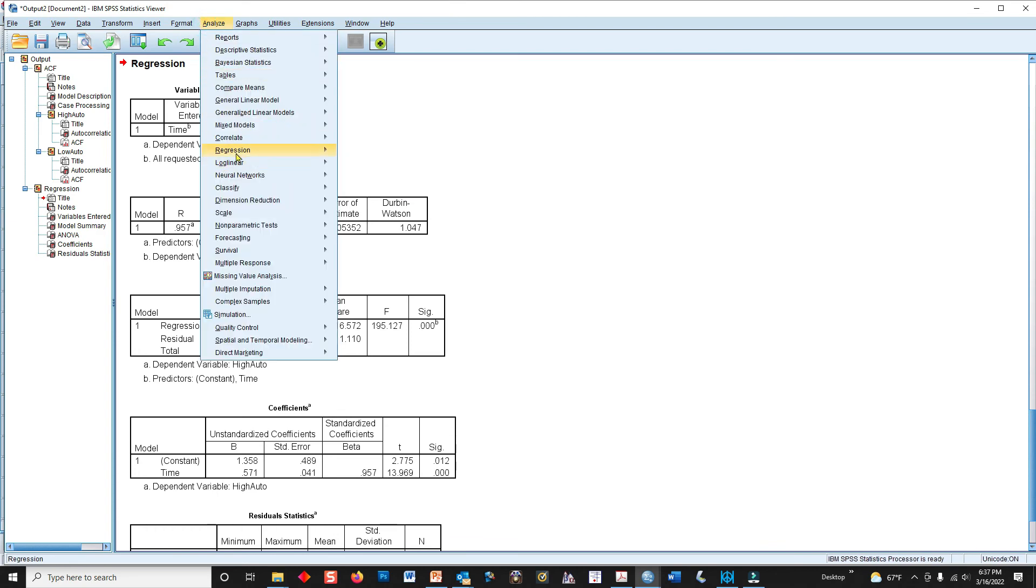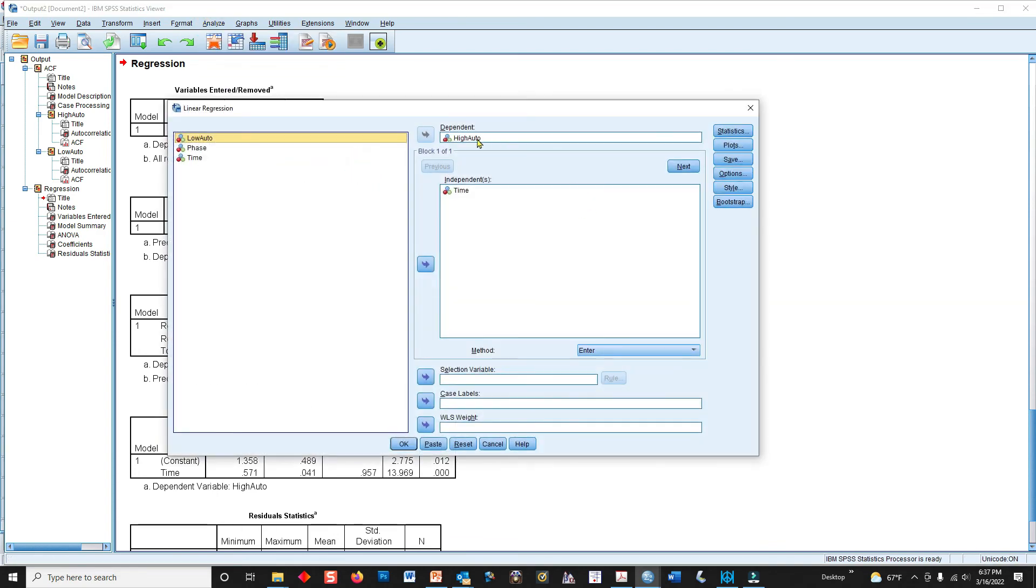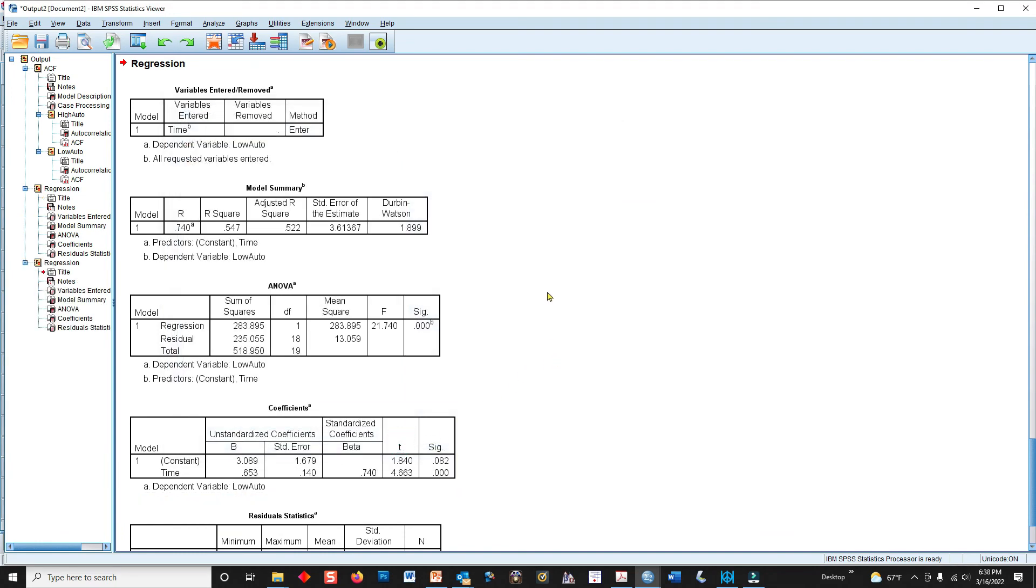So let's try it with the other variable, with the low autocorrelation variable. Let's pull that one over. And by way of comparison, this one for the low autocorrelation data set has a Durbin-Watson statistic that is very, very, very close to 2, where 2 is what you would expect if there is virtually no autocorrelation.